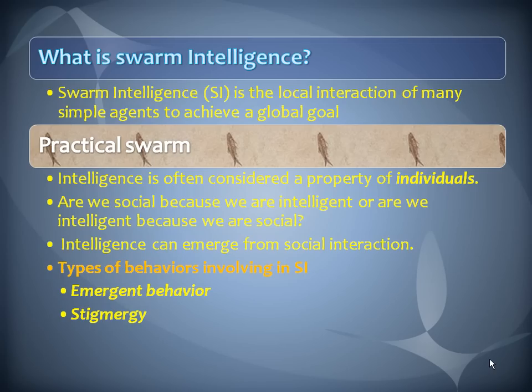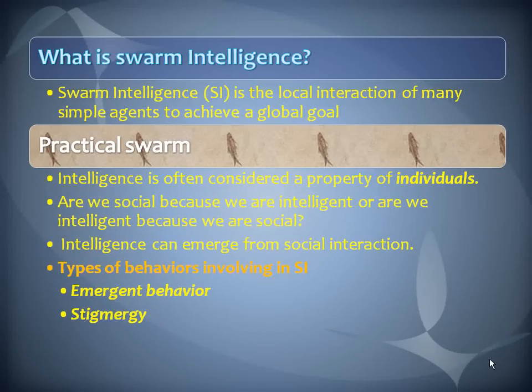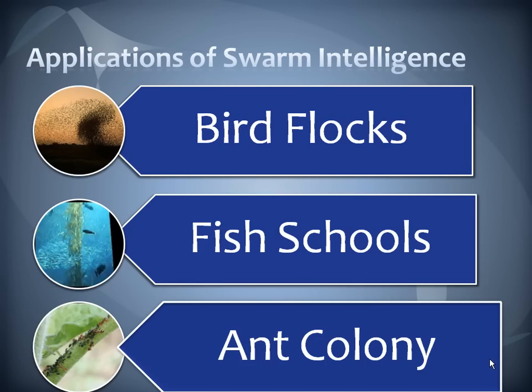The answer is: we gain intelligence from social interaction. When considering social interaction behavior, the main part under swarm intelligence involves two types of behavior — emergent behavior and stigmergy. Emergent behavior is unique global behavior arising from the interaction of many agents, and stigmergy is indirect communication achieved through the environment.